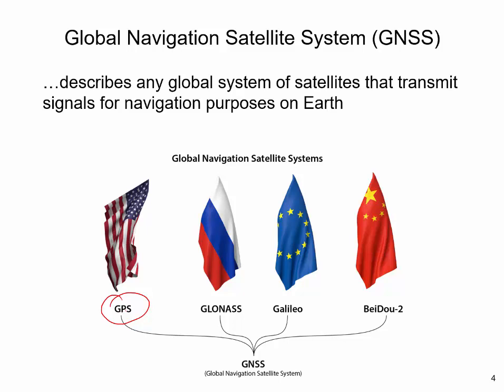They have in common that their orbiting satellites, whose positions are known, transmit signals which are used by receivers on or near the Earth to determine their locations. As shown in this figure, other prominent satellite positioning systems include the Russian GLONASS, the European GALILEO, or the Chinese BEIDOU-2.